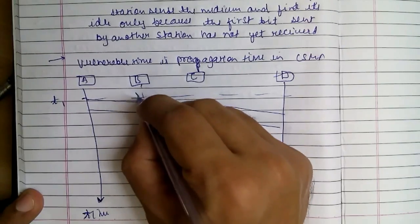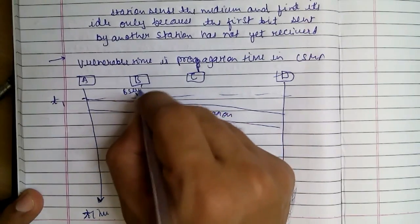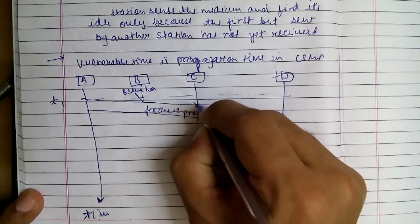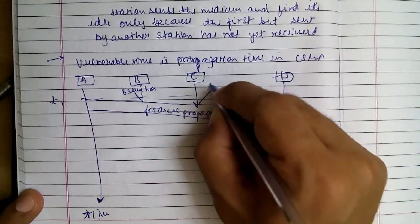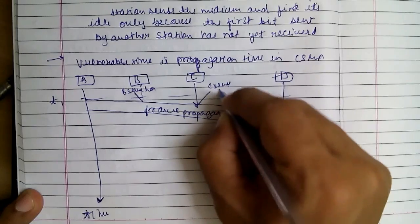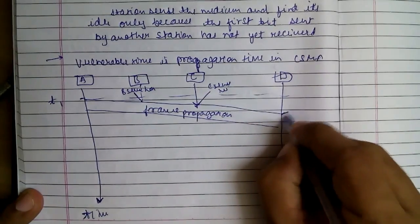B senses here, C senses here, and D senses here.